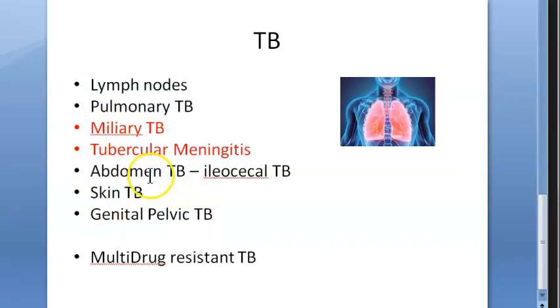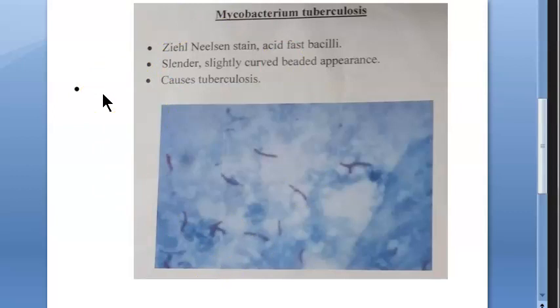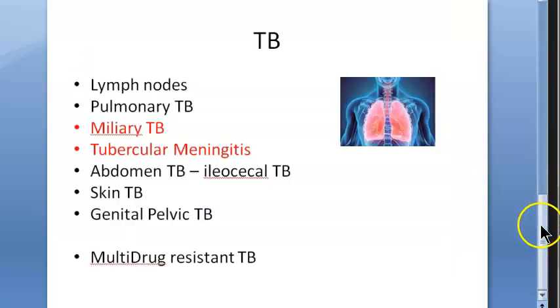Tuberculosis bacteria come from two main sources: milk — which is why you should drink pasteurized milk — and air, from other infected people. Since pasteurized milk is now widely available, most TB transmission is person-to-person. Wearing a face mask, similar to COVID-19 prevention, can also help prevent tuberculosis.